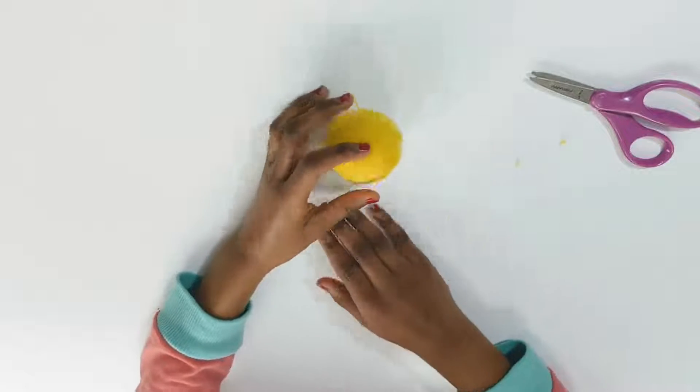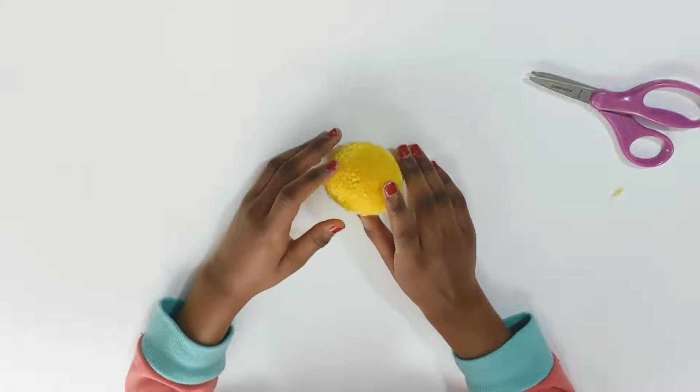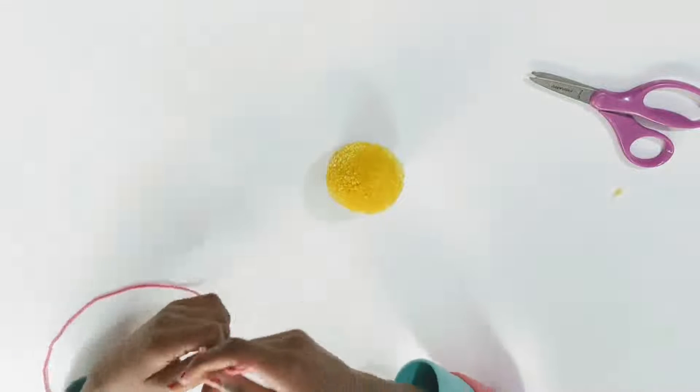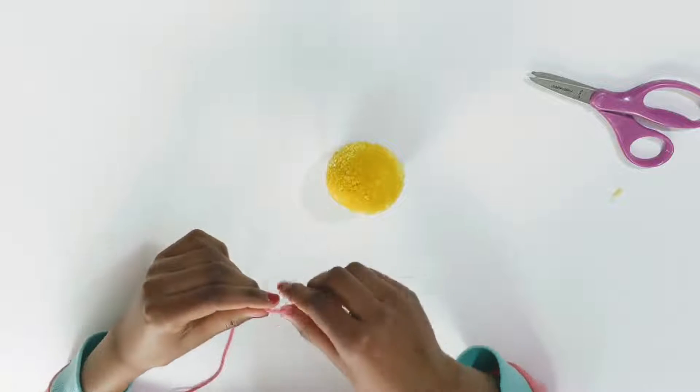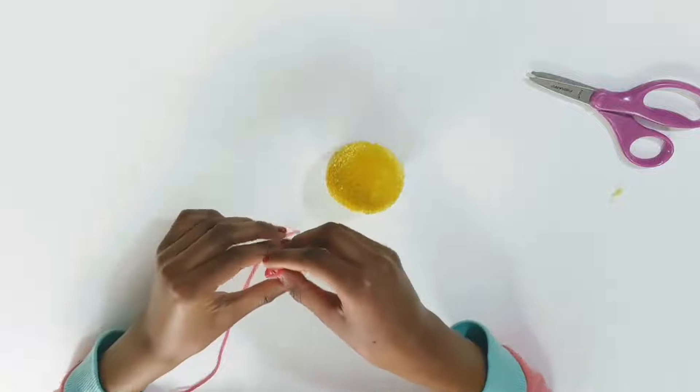And now, time to begin its face. We'll start with the nose. It's in the middle so it will give us a good scale of where everything goes. We'll start by wrapping some yarn around like this.